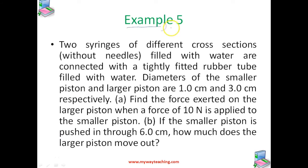Let us solve a very simple problem. The first problem is: two syringes of different cross sections without needles, filled with water, are connected with a tightly fitted rubber tube which is filled with water. Diameters of the smaller piston and larger piston are 1 cm and 3 cm respectively. Find the force exerted on the larger piston when a force of 10 N is applied to the smaller piston. If the smaller piston is pushed in through 6 cm, how much does the larger piston move out?